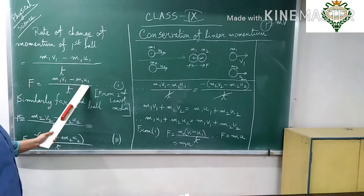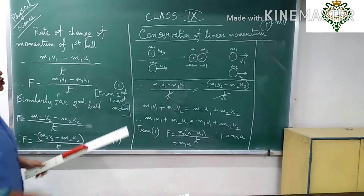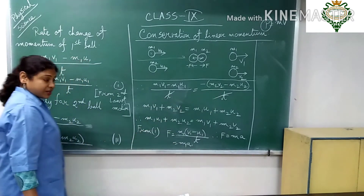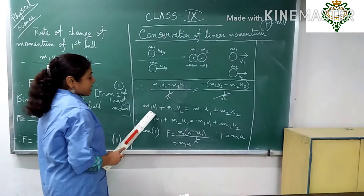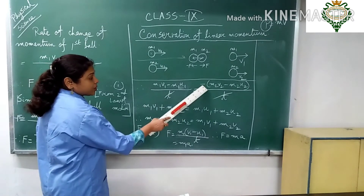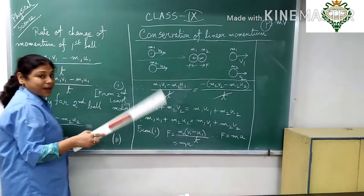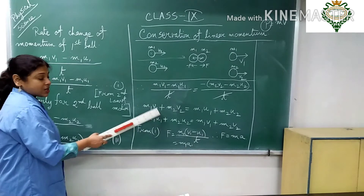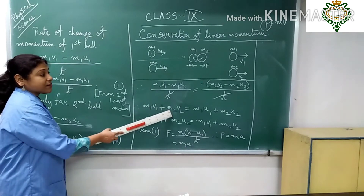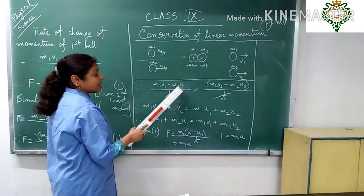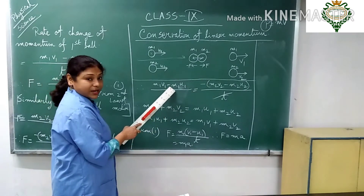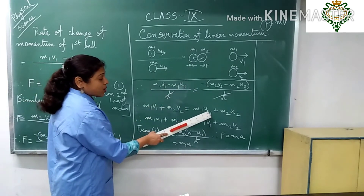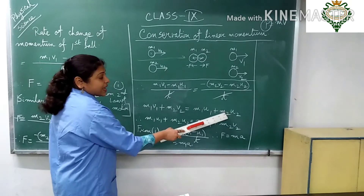Since F from equation one equals F from equation two, both sides are equal. After cancelling T, we get M1·V1 minus M1·U1 equals minus (M2·V2 minus M2·U2). Opening the brackets and rearranging, the minus signs change to plus when terms are moved to the other side, giving M1·V1 plus M2·V2 on one side.